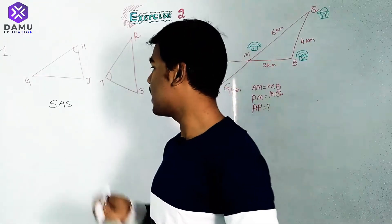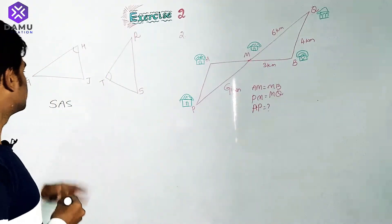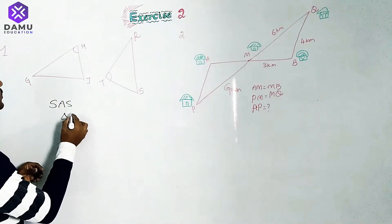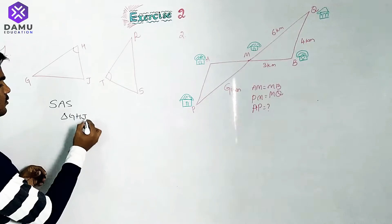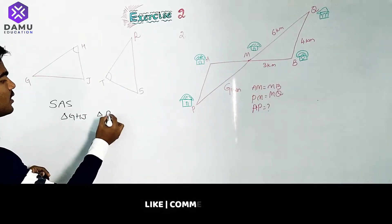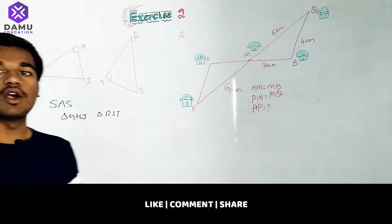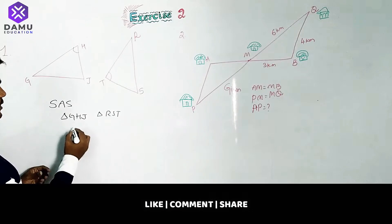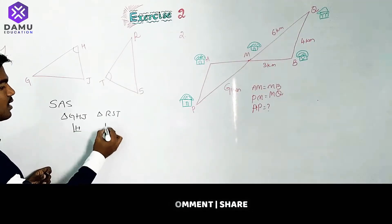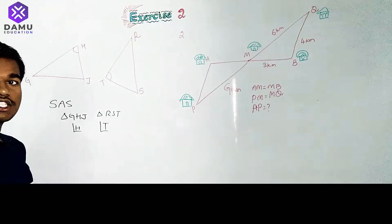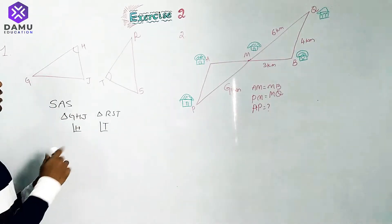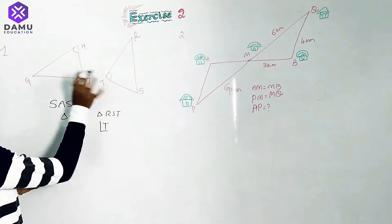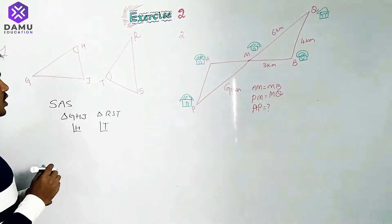Angles are already given in the question. We have triangles GHJ and triangle RST. The angles given are angle H and angle T — those two angles are already provided. We note that HJ is somewhat smaller than GH and R.